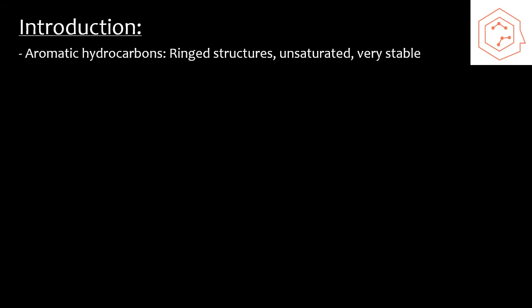Aromatic hydrocarbons are ring structures that are unsaturated, and because of their unique structures they're considered to be very stable. The simplest aromatic hydrocarbon, and the one we're going to be concerned with in this course, is known as benzene. Benzene has a chemical formula of C6H6, so there's an equal ratio of carbons to hydrogens in the structure.